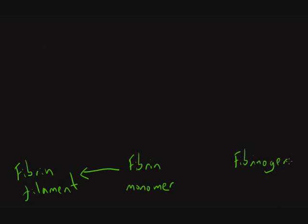The fibrin monomer is made from the breakdown of fibrinogen — which we've talked about before — and this step is the important one in the coagulation cascade. There's an enzyme that acts at this point to break down fibrinogen into a fibrin monomer, and that enzyme is called thrombin.